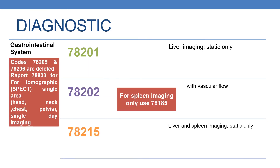Now coming to the next system — the gastrointestinal system. The first code is 78201, which deals with liver imaging, static only. The next code is 78202 deals with liver imaging with vascular flow. For spleen imaging only, you need to report 78185. Codes 78205 and 78206 are deleted; for that purpose, we need to report 78803 for tomographic single area — for example, head, neck, chest, pelvis — single day imaging.